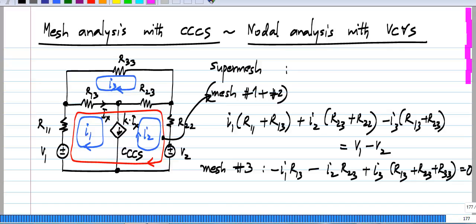The current controlled current source itself introduces another constraint. We know that the current in this minus the current in that equals this current. So, by combining I1 and I2 in this branch, we know that this current k times Ix is I1 minus I2. So, I1 minus I2 is k times Ix and Ix itself is the current through this branch R13. So, it is k times I1 minus I3.